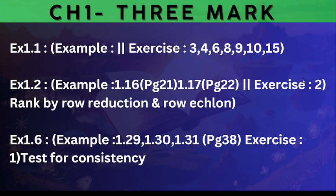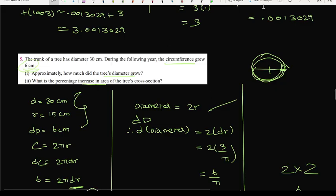So chapter wise, exercise 1.1 includes exercises 3, 4, 6, 8, 9, 10, 15. But it is very important exercise 1.2, rank by row reduction method and row echelon method.